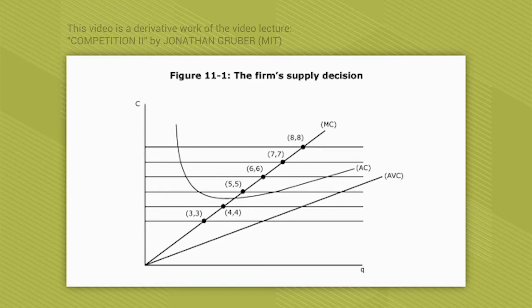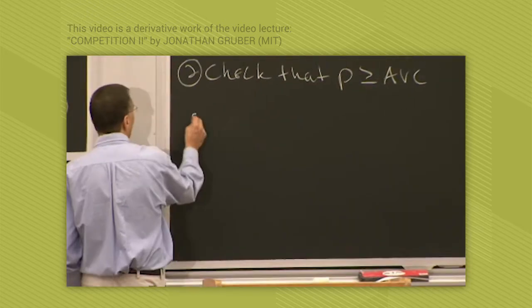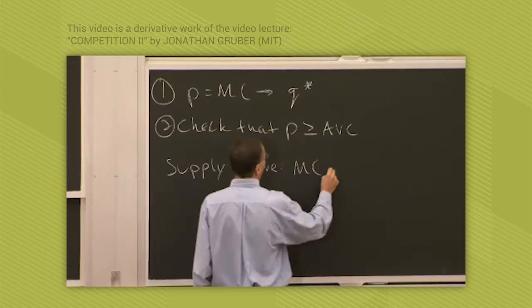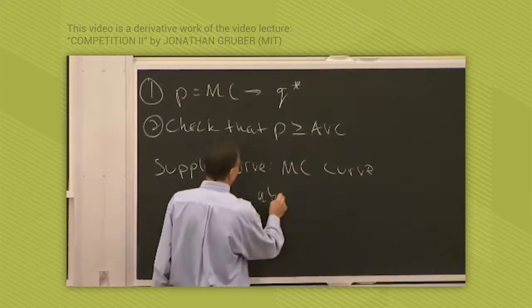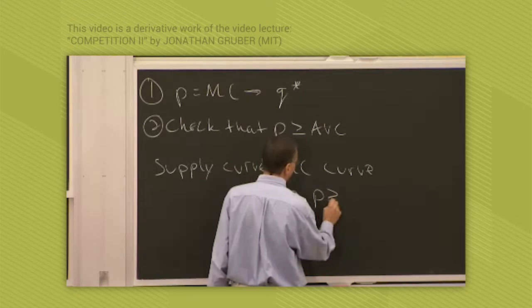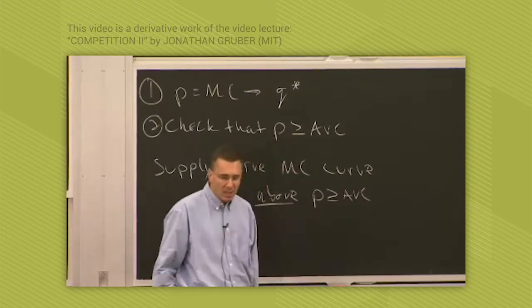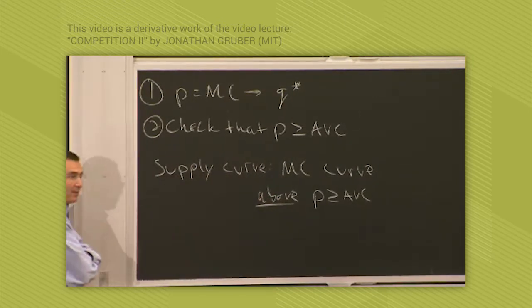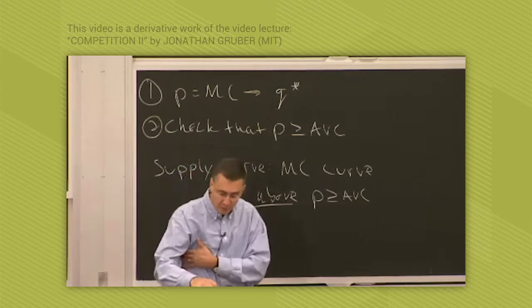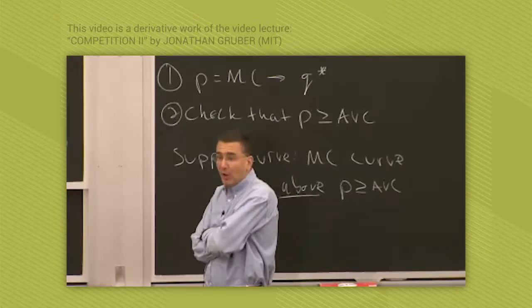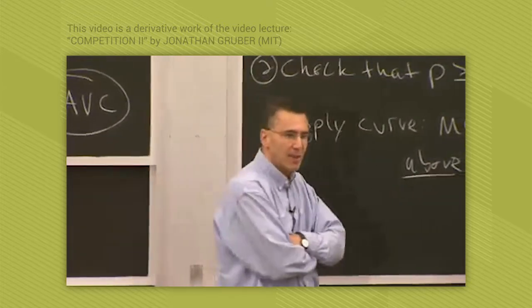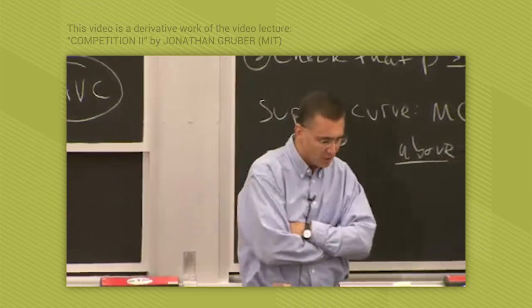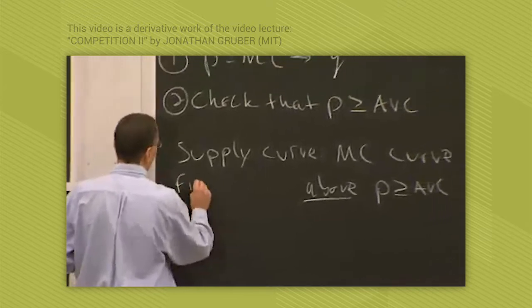It's above the point where price equals average variable cost. The definition of a firm supply curve is the marginal cost curve above P greater than or equal to average variable cost. That is the firm short-run supply curve. In our case, P is always greater than average variable cost, so the second condition is irrelevant. With different functions, which you may at some day see in a problem set or an exam, that won't be true. So you need to check that shutdown condition.